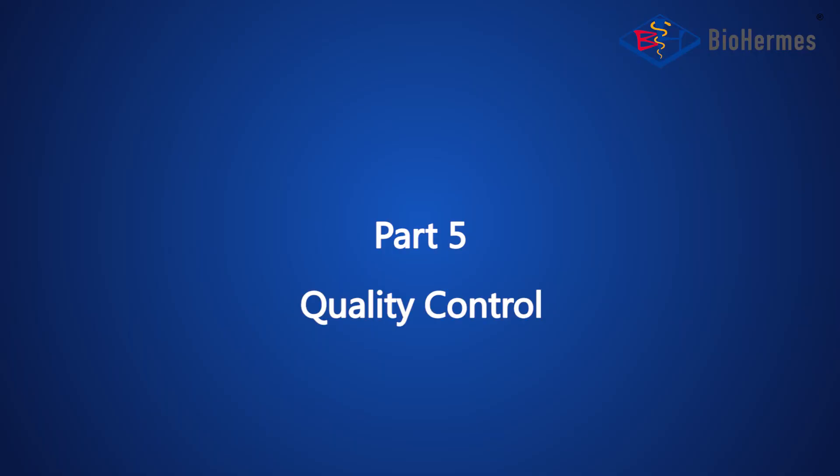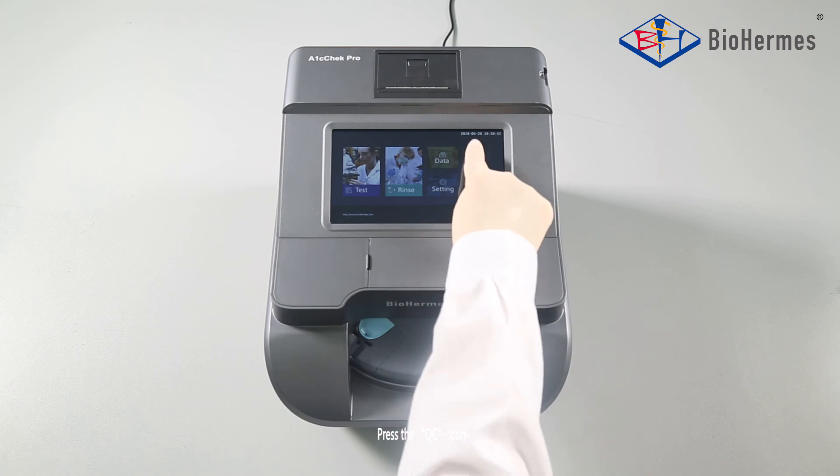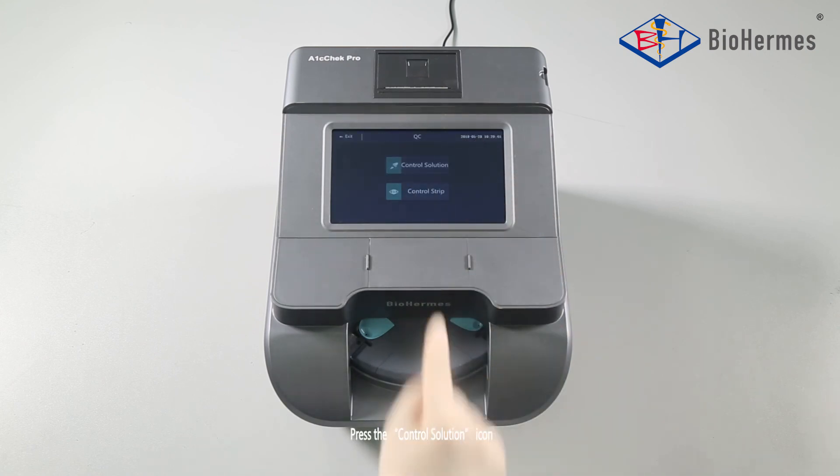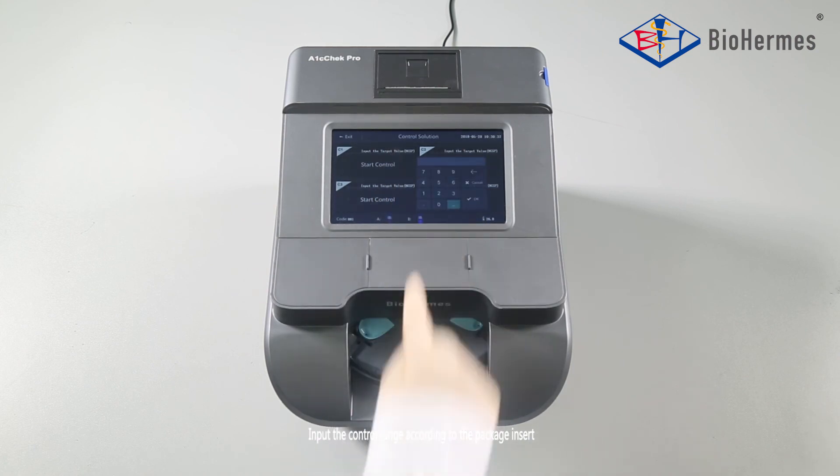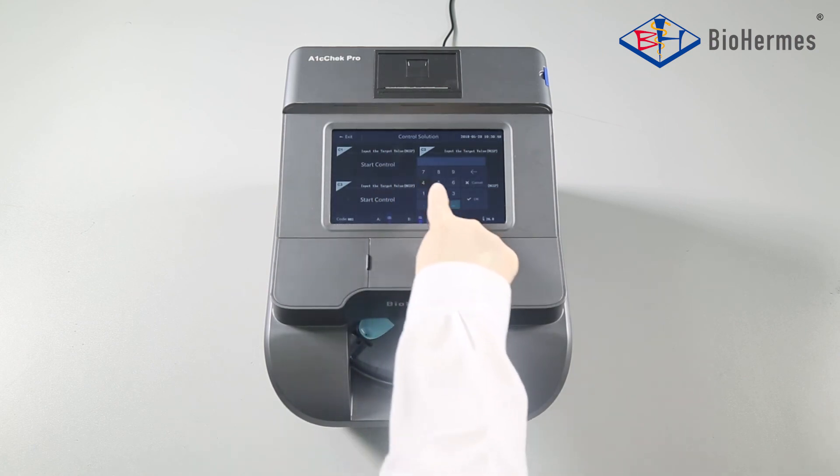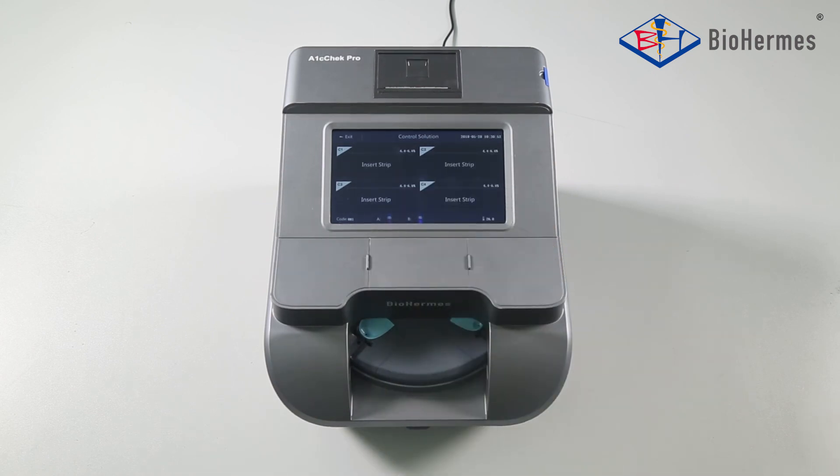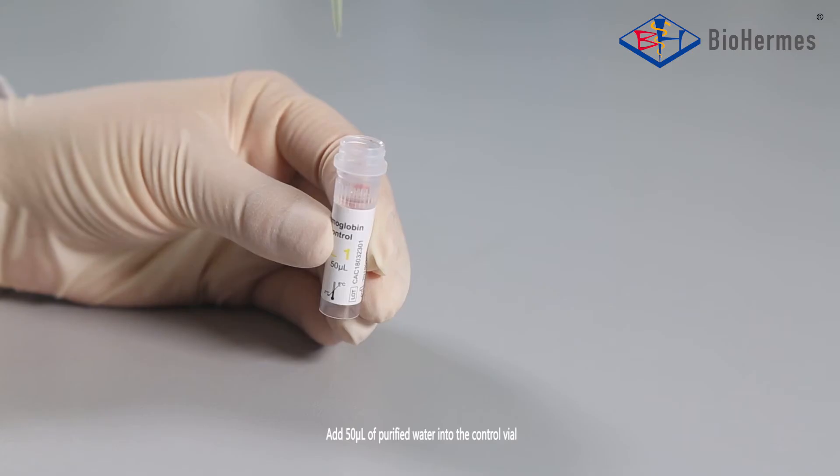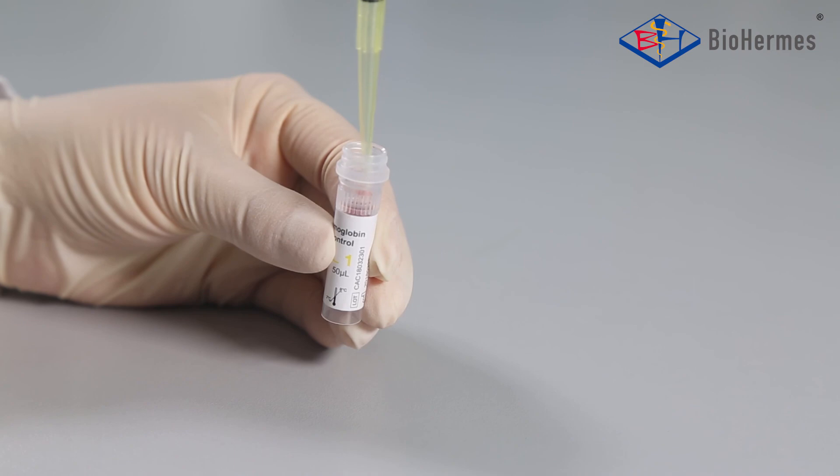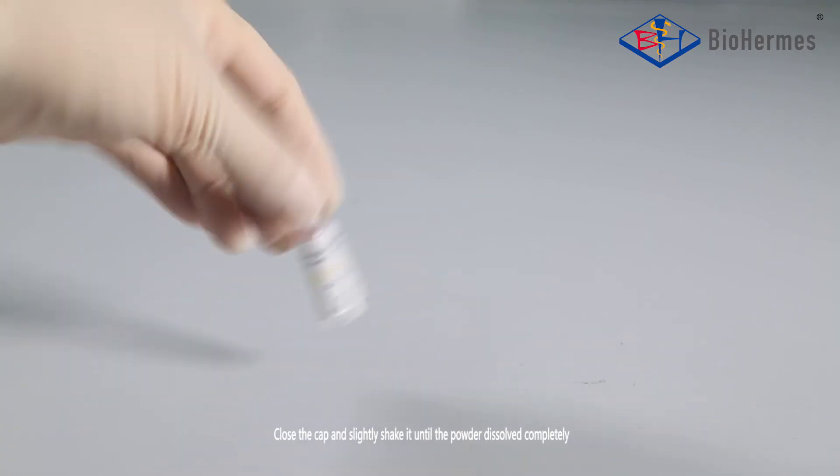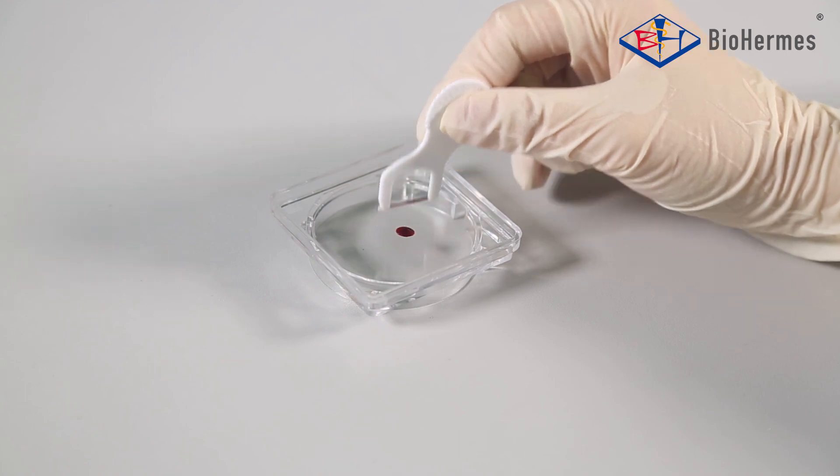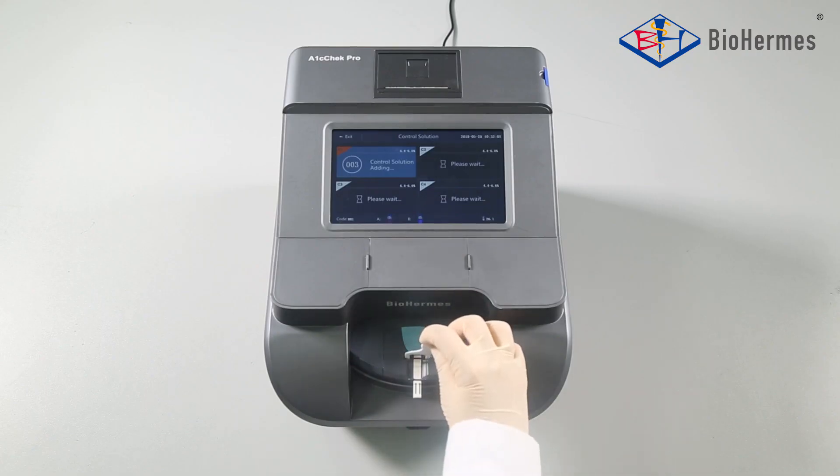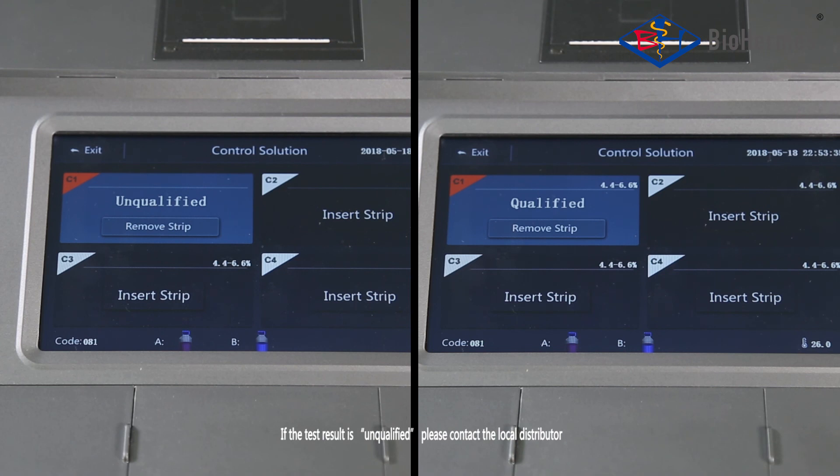Part 5: Quality Control. Press the QC icon. Press the control solution icon. Input the control range according to the package insert. Add 50 microliters of purified water into the control vial. Close the cap and slightly shake it until the powder dissolved completely. Conduct the quality control test according to the test procedure. If the test result is unqualified, please contact the local distributor.